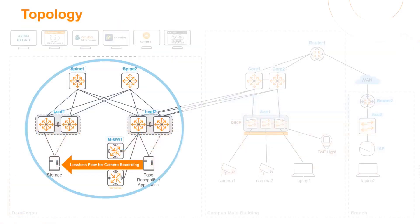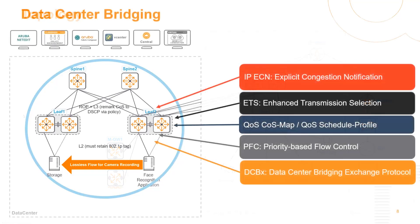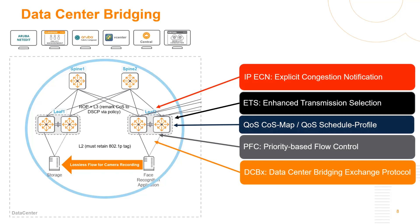Looking at our campus data center scenario, within our data center the face recognition app is receiving a stream of traffic and copying it to a storage array — the app is on leaf 1 and the storage array is attached to leaf 2. The customer deploys this in a data center bridging solution to provide lossless traffic between these racks, which can experience a lot of congestion. DCBX is configured on the interfaces facing the initiators and targets to simplify configuration, and PFC is leveraged across that link to ensure no traffic in that queue is dropped.